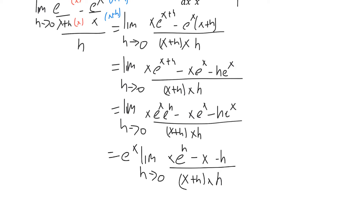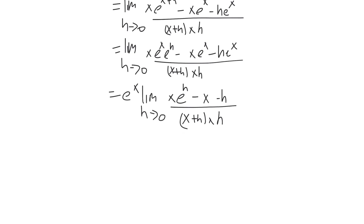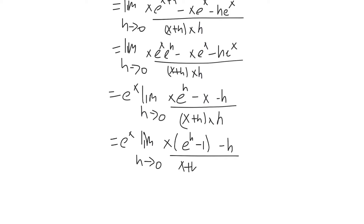From here, there's not really anything that factors overall, although you could say maybe an x factors from just two of those terms. And so if we do that, we get e to the x times the limit as h approaches 0 of x times the quantity e to the h minus 1, minus h, all over x plus h times x times h.